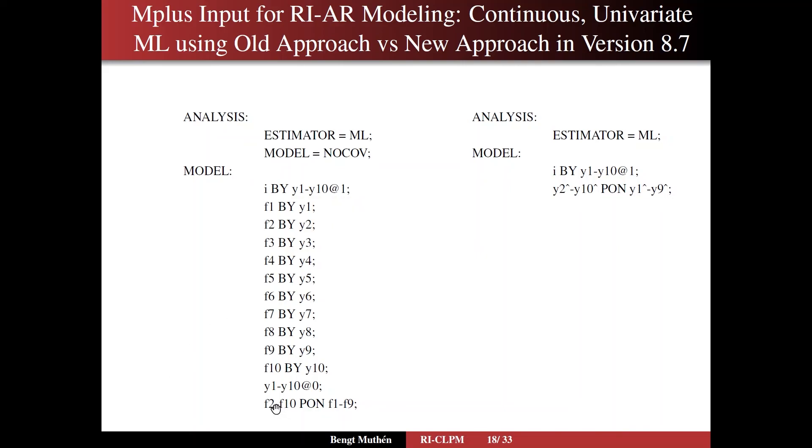And then we do the AR regressions among the factors. So this is the univariate part of the RICLPM. We add model equals no covariances to not have to fix at zero all unwanted covariances, for instance, between I and the different Fs. On the right, you have the simplified language. No specification except for these two lines, really.